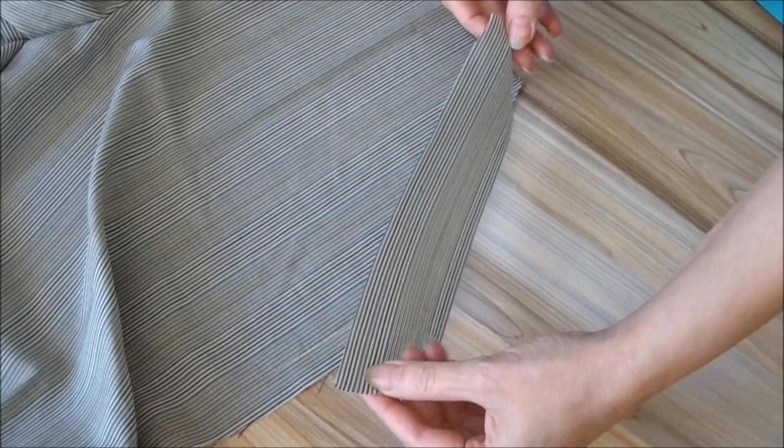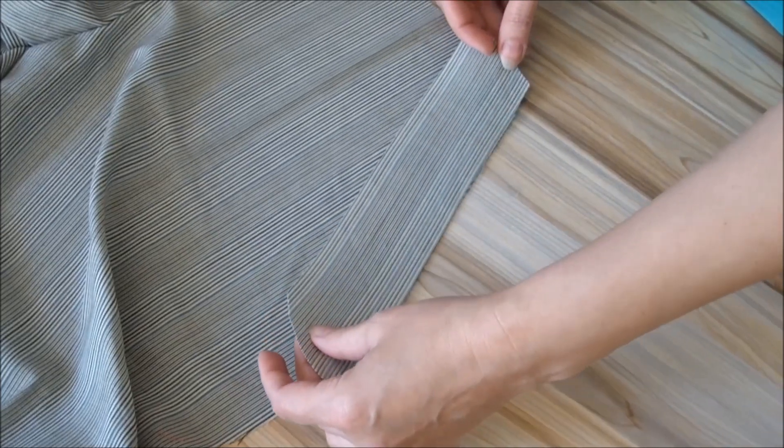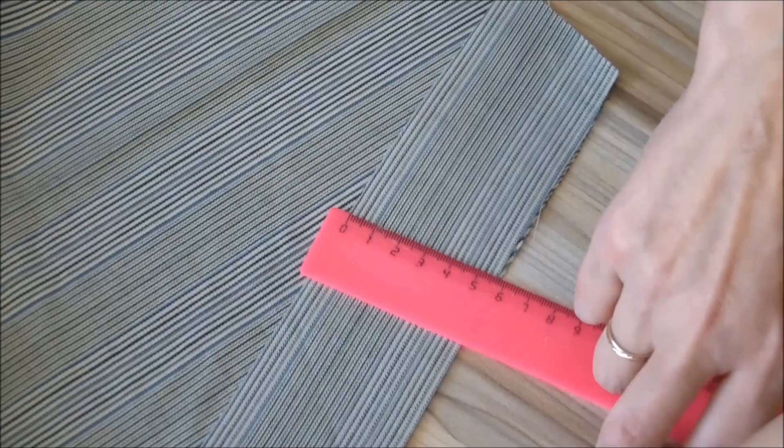To sew this type of pocket, you will need to cut a strip 4-6 cm wide. You need to cut it along grain direction of fabric.